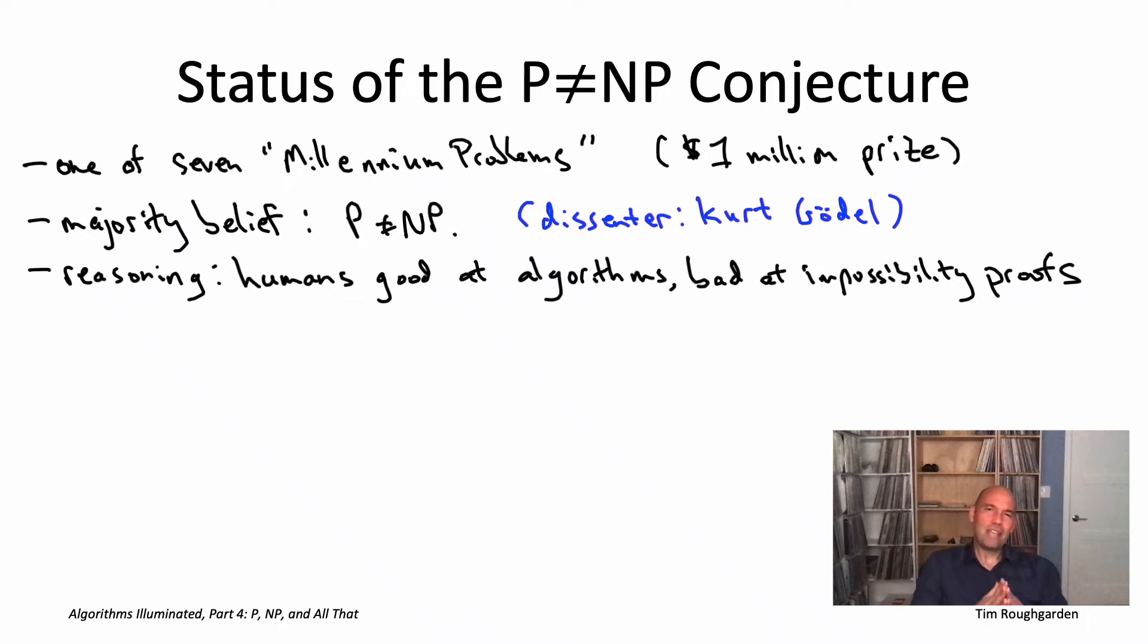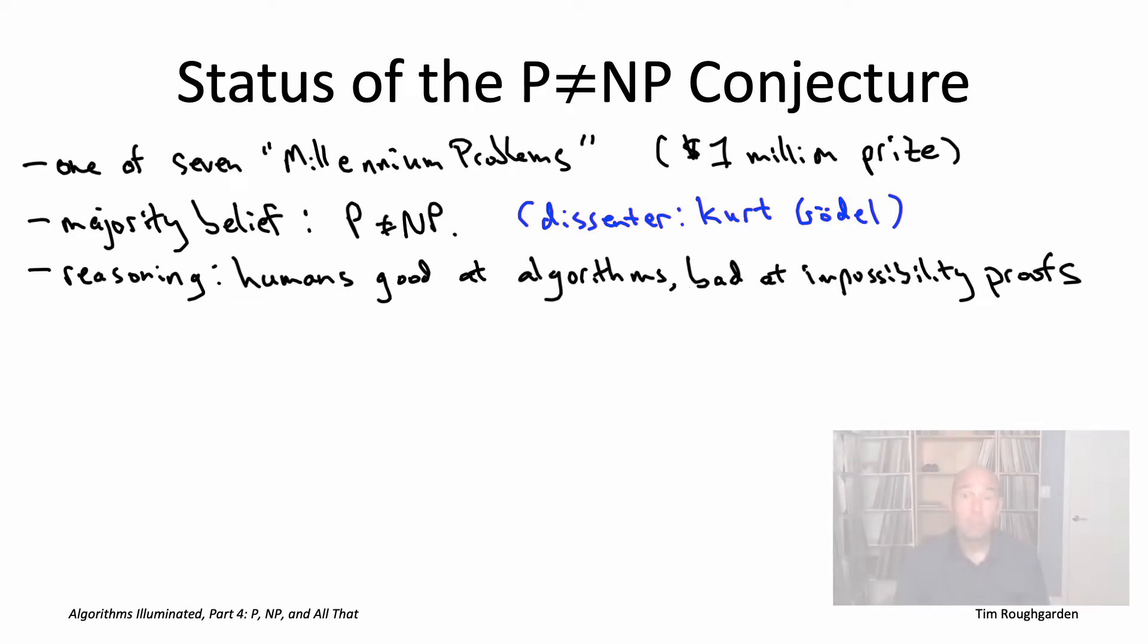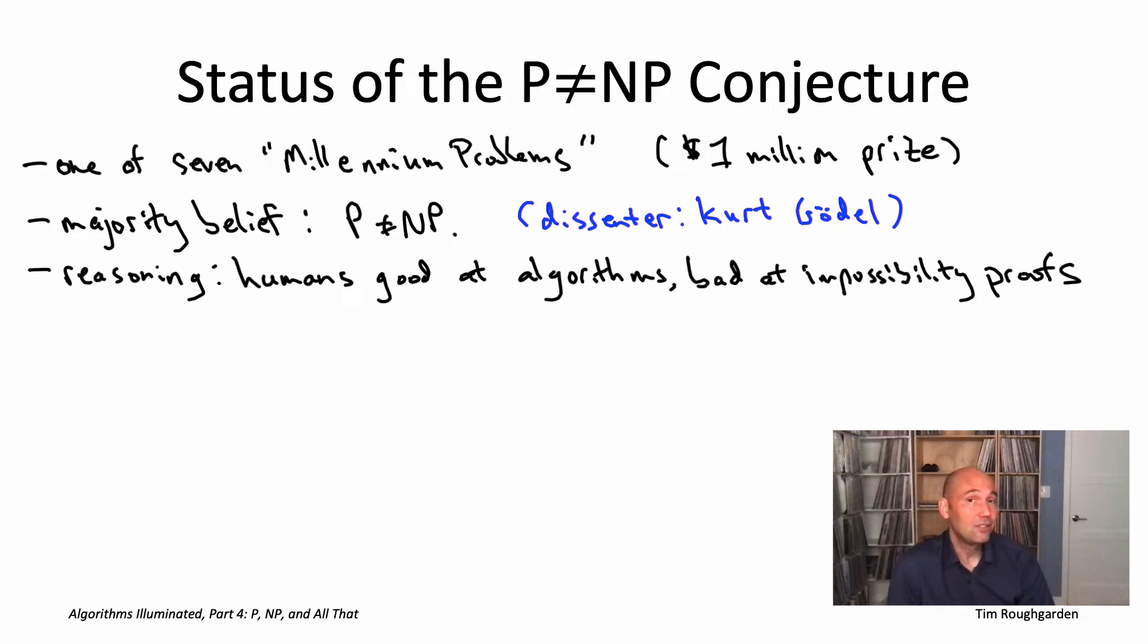The second reason is the prospect of P and NP being the same, of efficient recognition being sufficient for efficient solvability, just doesn't jive with our experience in reality. We all know from firsthand experience tasks where checking someone's solution appears much easier than coming up with your own from scratch. Even a difficult Sudoku puzzle fits that category. But if P equals NP, that would say the creativity that appears necessary to solve difficult problems can be efficiently automated. For example, if P equals NP, you could generate a proof of Fermat's last theorem automatically in time polynomial in the length of the proof.